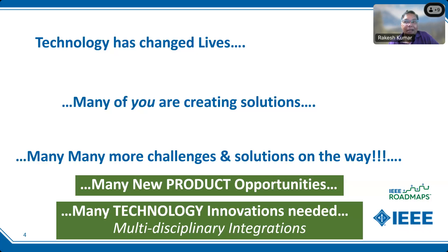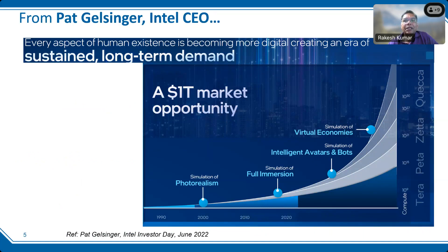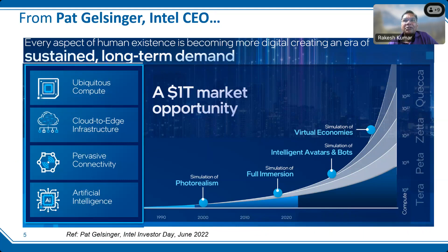For example, if you were to implant a chip in the brain, it's not just about the design of the chip. It's about the process technology, how you encapsulate it, how you get the neural signals out of it, and how you process that data in an AI or ML fashion. A lot of different technologies have to come together. I showed a couple of charts from Intel CEO Pat Gelsinger from last year's Intel Day, talking about a huge market opportunity — from full immersion and intelligent avatars to virtual economies — generating zettabytes of data, up to 10 to the 27th and 10 to the 30th bits of data. Pretty exciting opportunities, and all of this is going to require semiconductor technology, packaging technology, and design technology to come together.